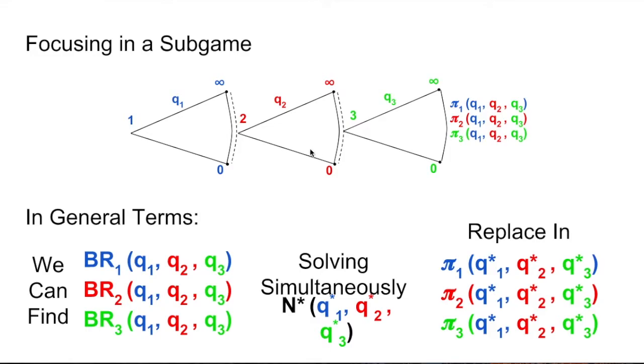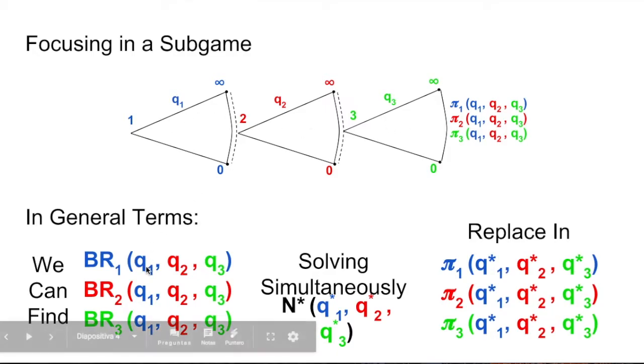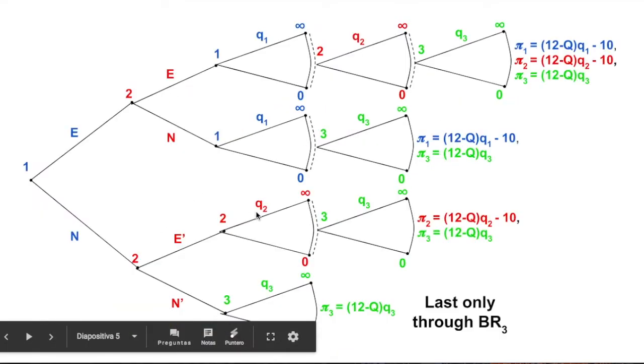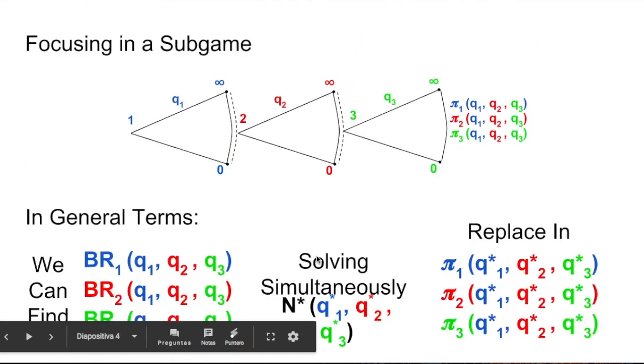We are going to focus on one subgame to see what we do step by step. We have three players here. We have three best responses. Three best responses, and then we solve these best responses simultaneously. And when we solve the simultaneous solution of these best responses, we get the quantities 1, 2, and 3. With these three quantities, we substitute them in the original payoff function to get the best payment we can get in equilibrium.